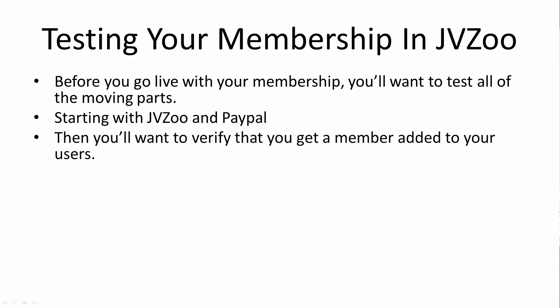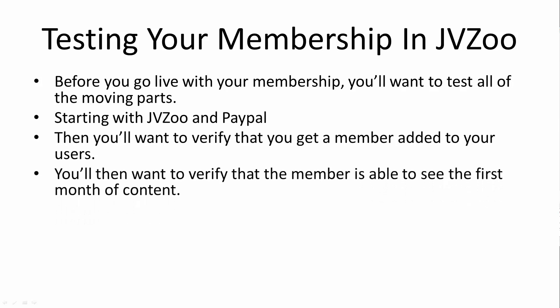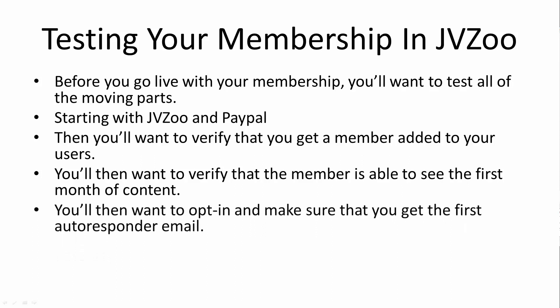You're also going to want to verify that you get a member added to your user section, and that the member is going to be able to see the first month of content. When you actually go through the testing process, make sure you use an email address that you'll be able to check and look at as if you were your own customer. You'll then want to opt into your list and make sure you get the first autoresponder email, because that's going to be a good indication that you're going to get the other one in 30 days.